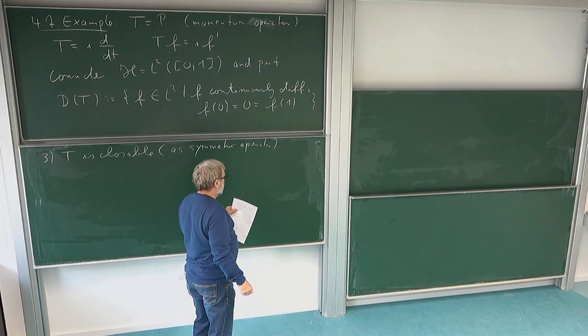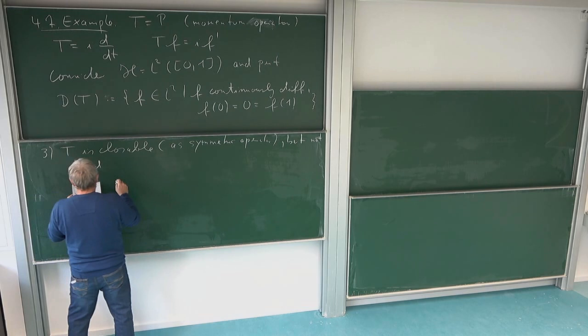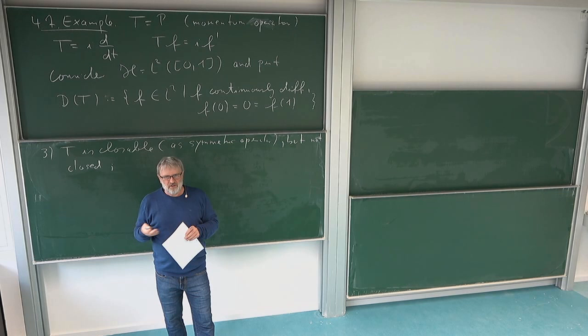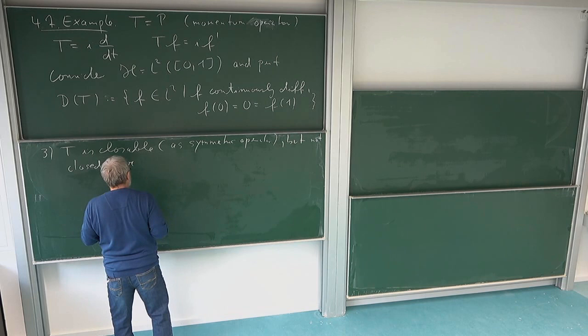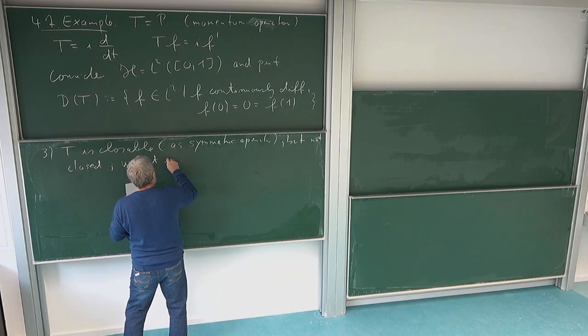First of all, one should think about: is it actually closed? But it is not. How do we see this? We know if we have a closable operator, we can get its closure by just taking the adjoint of the adjoint. This always gives the closure of our operator. So let us just do this in our case, because we have the adjoint and taking the adjoint of the adjoint is more or less the same calculation — something we can do quite easily.